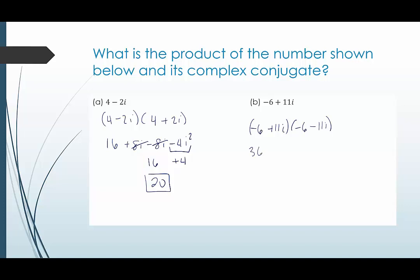Negative six times negative six is positive 36. Negative six times negative 11i will be positive 66i. Positive 11i times negative six will be negative 66i. And positive 11i times negative 11i will be negative 121 i squared. In the middle, those terms cancel, those imaginaries.